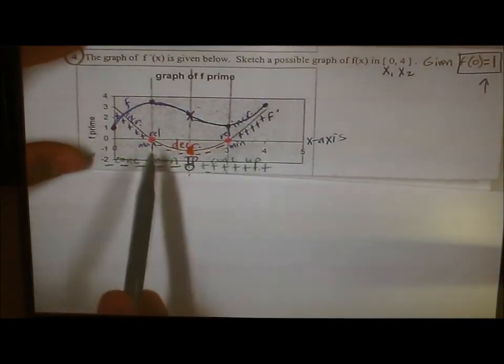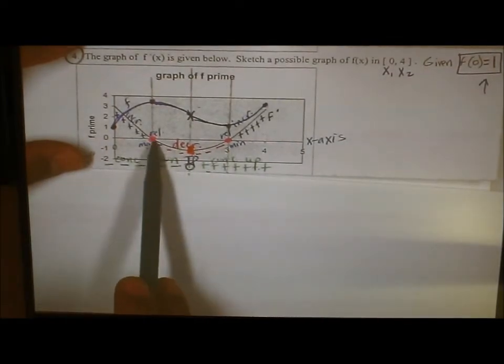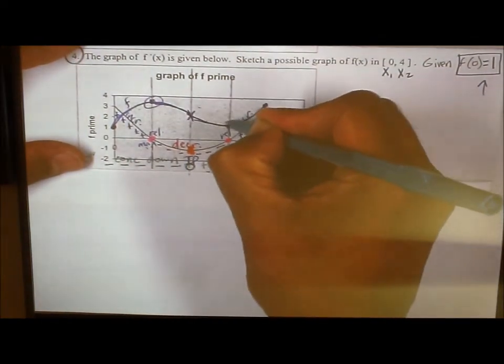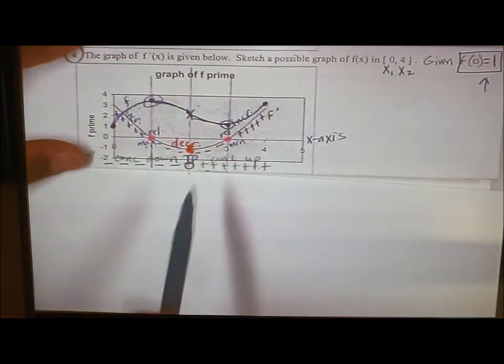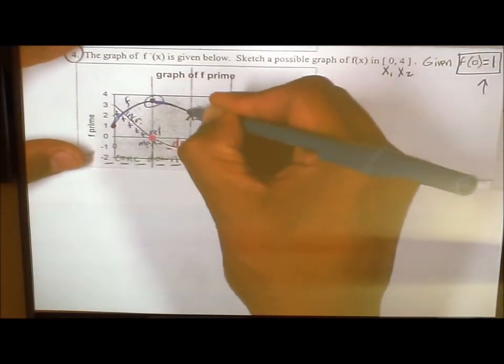Okay, all the special points that you would initially label should show up. Like, is there a relative max at x equals 1? Yes. Is there a relative min at x equals 3? Yes. Is there an inflection point at x equals 2? Yes. Here's your inflection point, right?